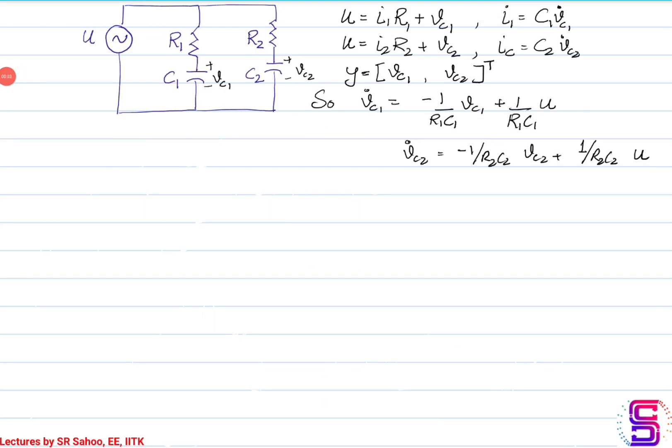In this lecture, we will discuss an example on reachability and controllability in ETA. We will take up this electrical circuit and try to see whether this circuit with the input voltage given by U is reachable and controllable or not.